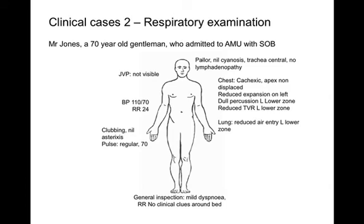There was associated reduced tactile vocal resonance and reduced air entry in the left lower zone on auscultation. In summary, this 70-year-old chap presented to the AMU with shortness of breath, with clinical chest findings suggestive of a left-sided pleural effusion, which could be secondary to CA lung. To complete my examination, I would request a baseline set of observations and obtain a sputum sample for culture. To investigate further, I would perform blood tests including an arterial blood gas for oxygenation levels, routine venous blood samples including clotting, as a chest drain may need to be inserted. Imaging would include a chest X-ray. I would then discuss with my senior colleague with the view of getting more specialist investigations such as a CT and a respiratory opinion. For management, I would first resuscitate according to the ABCDE protocol, and based on my clinical findings, I suspect this patient will need a left-sided chest drain.